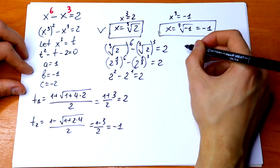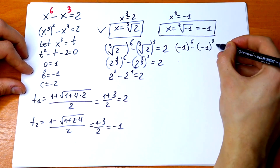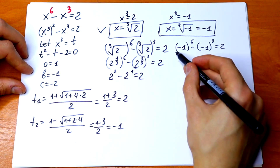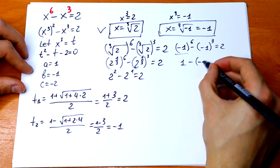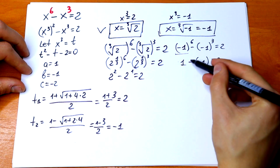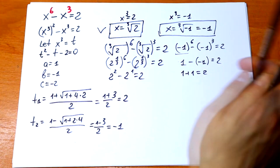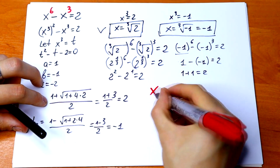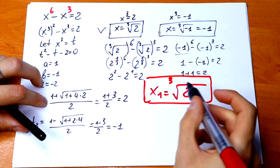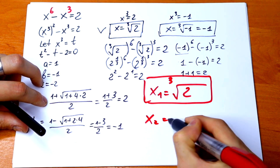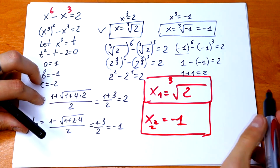Let's check the second root. We will have minus 1 to the sixth power minus minus 1 to the third power equal to 2. This equals 1 minus and minus 1 cubed, which is minus 1. These two minuses make a plus, so 1 plus 1 equals 2. So we have two roots: x₁ equal to cube root of 2, which checks out, and x₂ equal to minus 1, which is also a valid root.